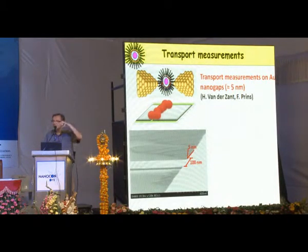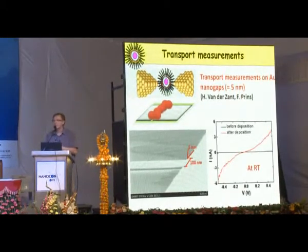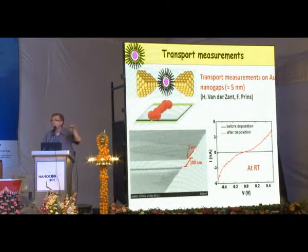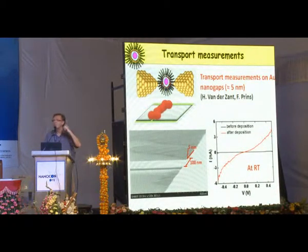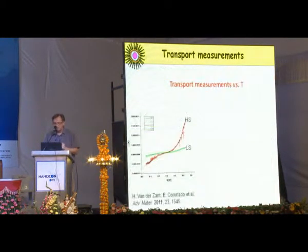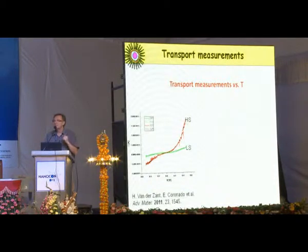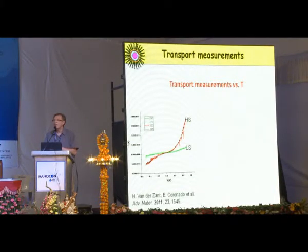We deposited our nanoparticles into the gap, and in some devices only a single nanoparticle is present. When the gap is empty, the IV curve is completely flat — no current passes through. Once a nanoparticle is in place, we observe conductance and electron transport through the particle. When we change the temperature, we observe two distinct conductance regimes: the lower conductance at low temperature and a higher conductance at elevated temperature, corresponding to the two spin states.